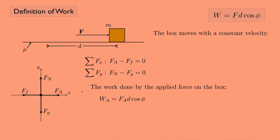The work done by the applied force W_a equals F_a times D times the cosine of phi. The applied force and the displacement vector lie right on top of each other, so the angle phi is zero degrees. The cosine of zero is one, so the work done by the applied force is simply F_a times D.